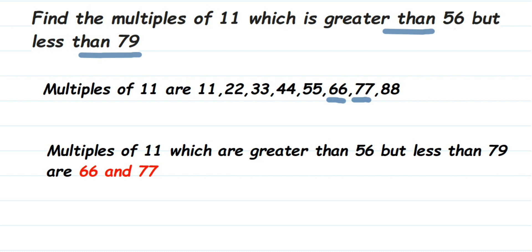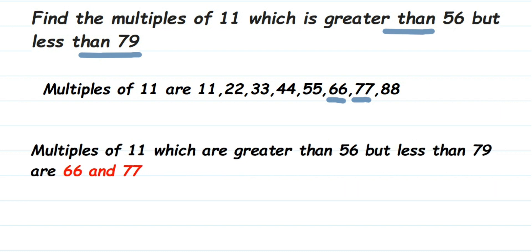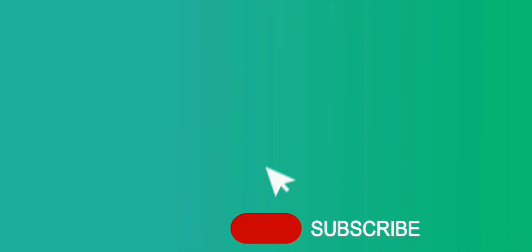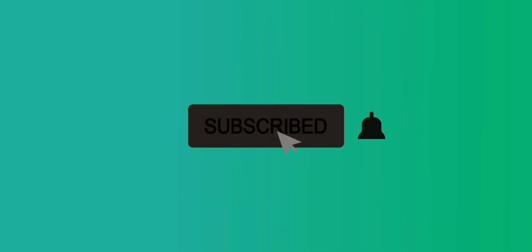So we can conclude that the multiples of 11 which are greater than 56 but less than 79 are 66 and 77. I hope this question is clear. Thank you so much for watching.